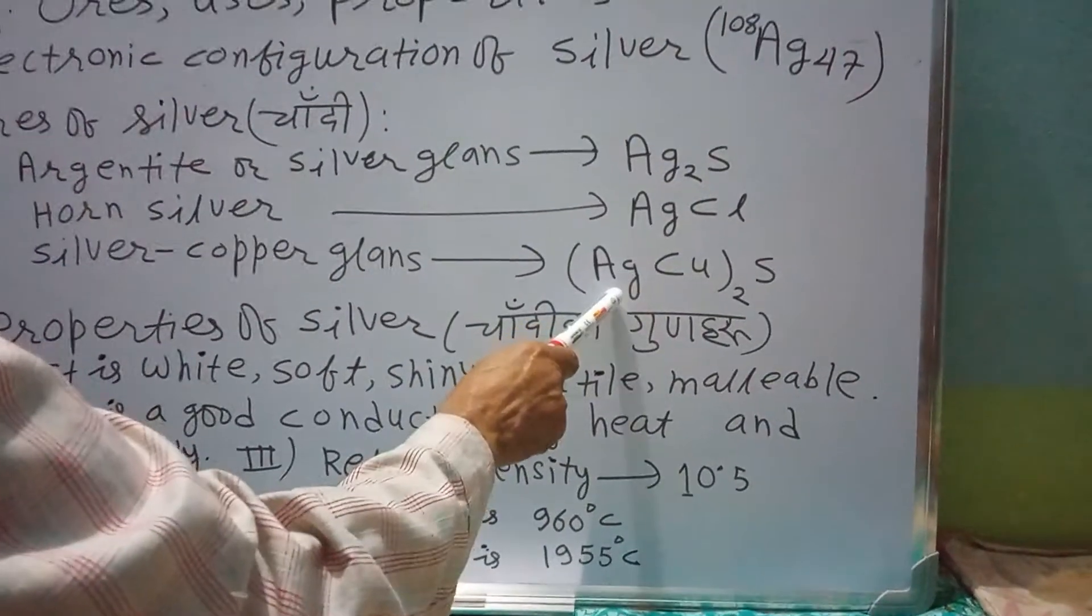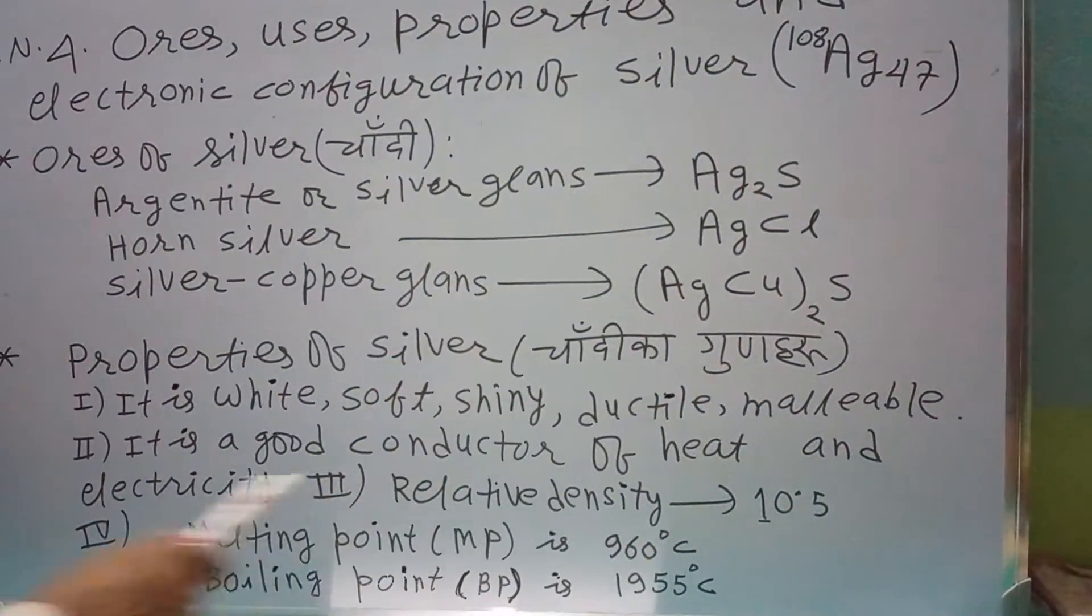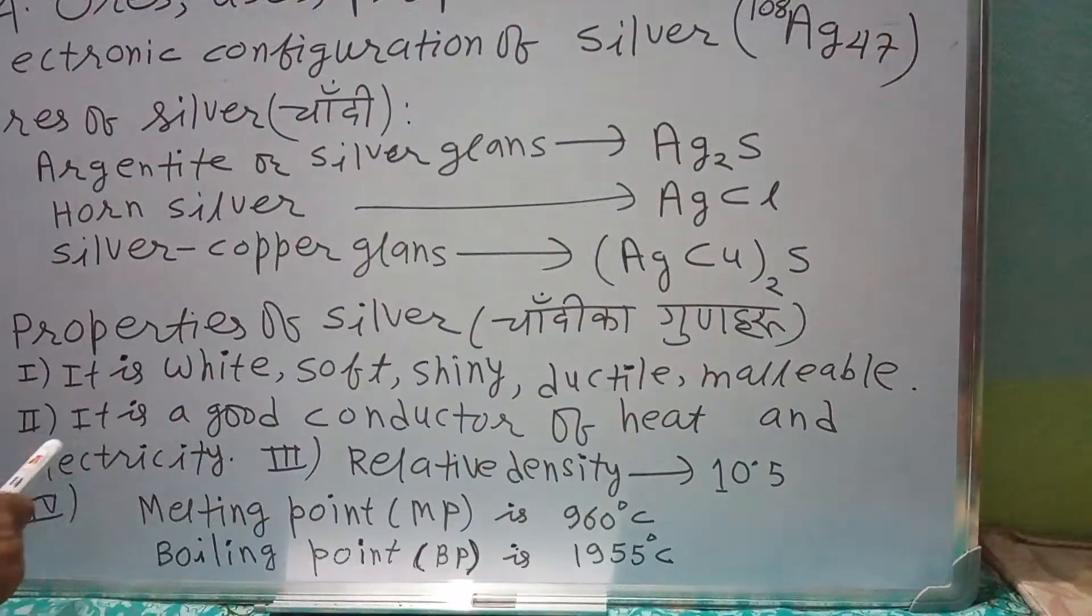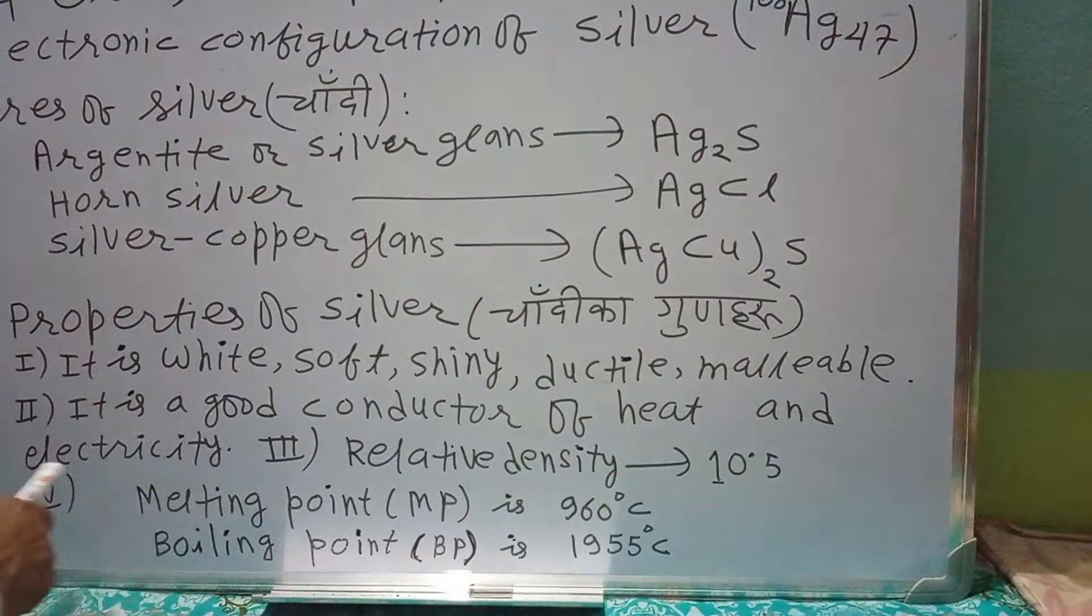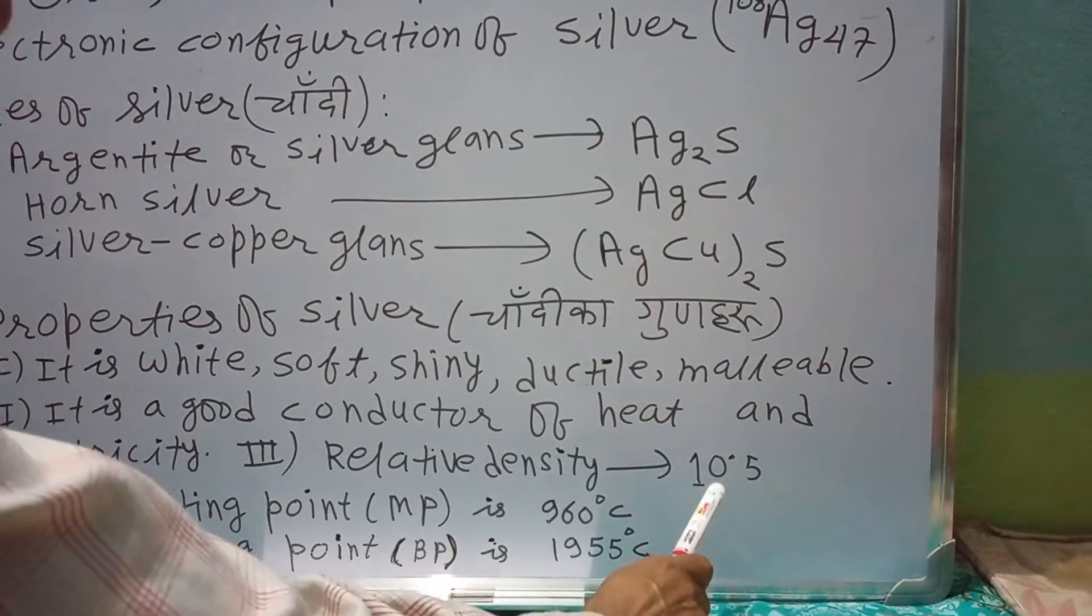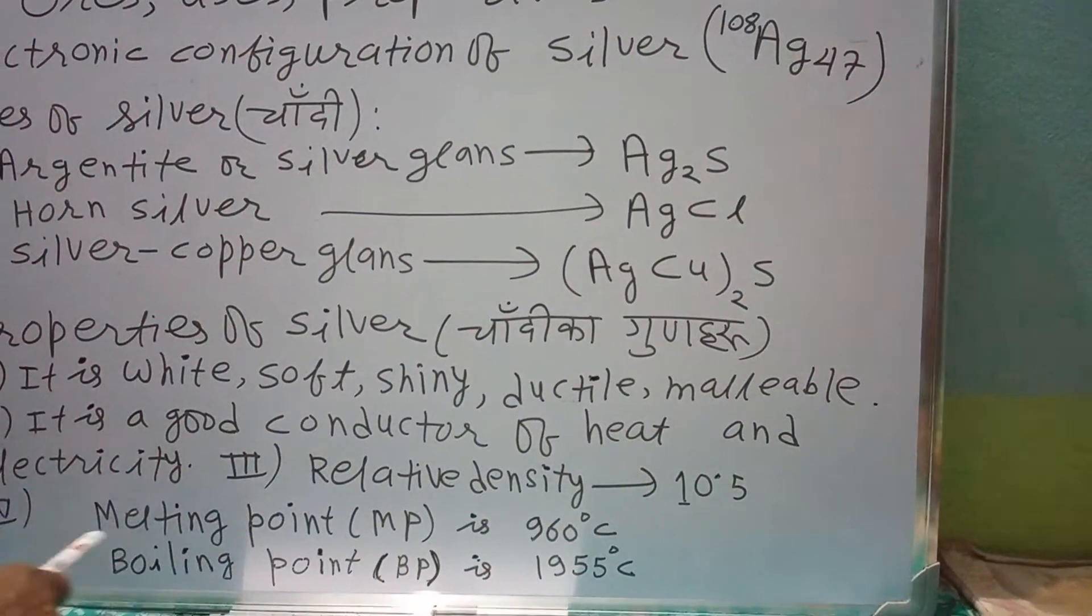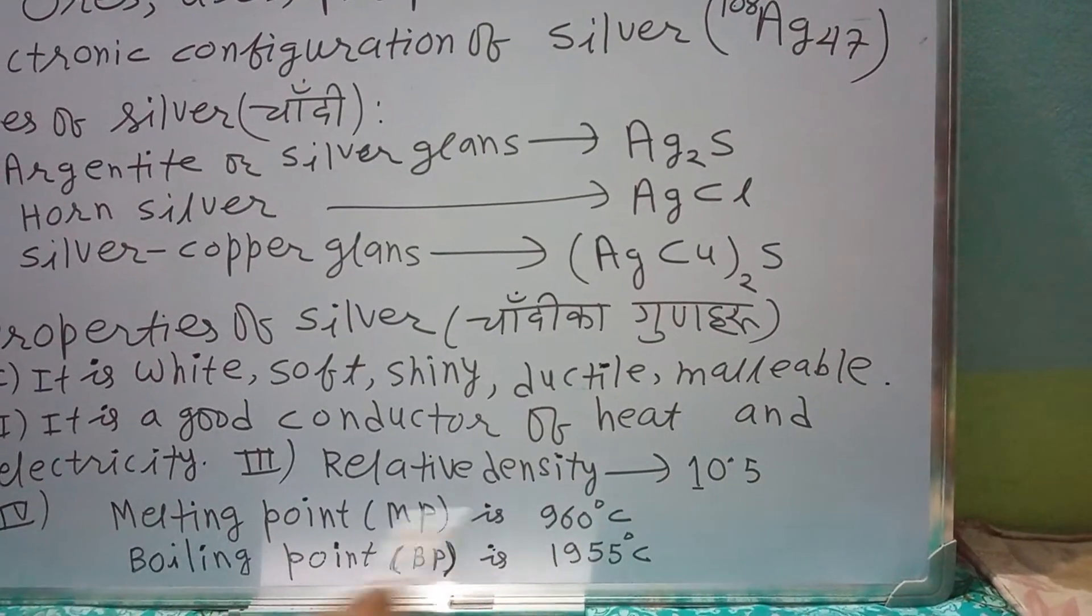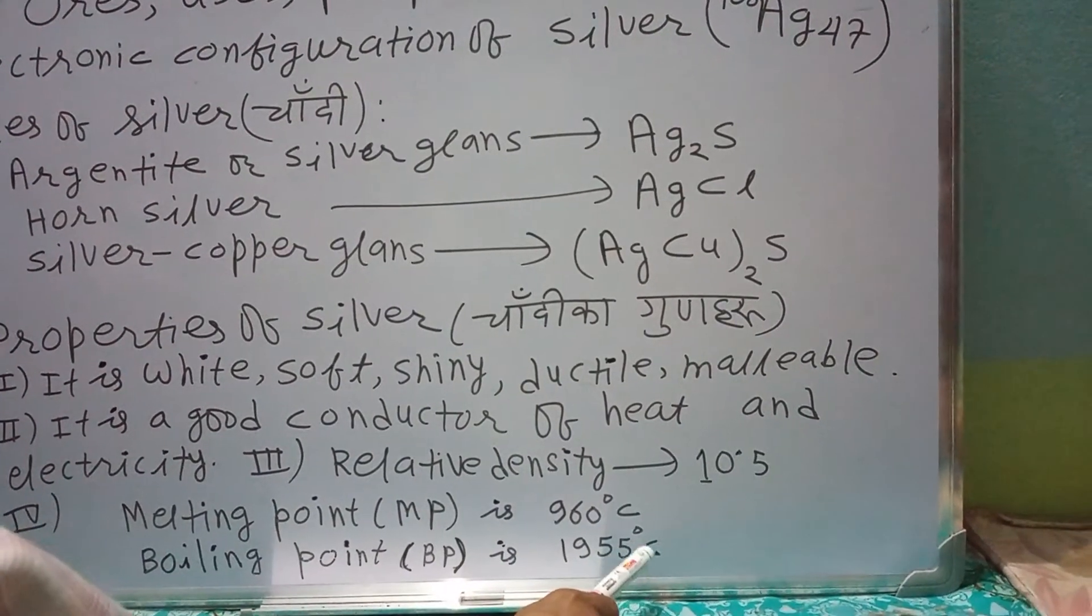Properties of silver: Number 1, it is white, soft, shiny, ductile and malleable. Number 2, it is a good conductor of heat and electricity. Number 3, its relative density is 10.5. It means it is 10.5 times heavier than pure water at 4 degree Celsius. Number 4, its melting point is 960 degree Celsius and its boiling point is 1955 degree Celsius.